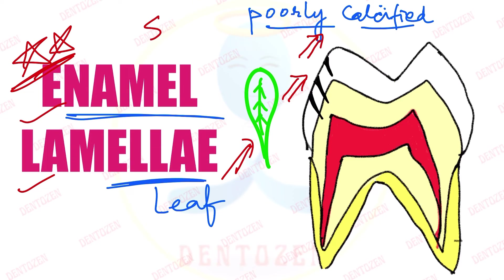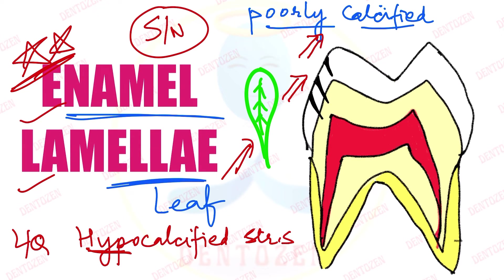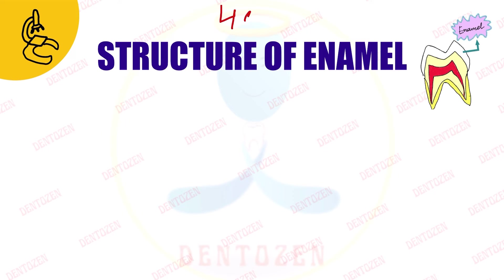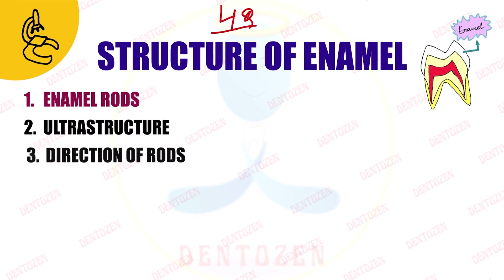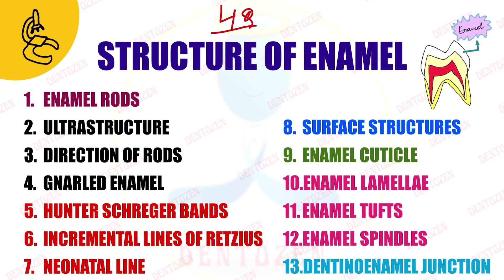This topic can come as a short note or as part of your long question on hypocalcified structures of enamel. Since enamel lamellae are hypocalcified — that means less or poorly calcified — you have to include them in your long question on hypocalcified structures of teeth, as well as in questions on the structure of enamel.